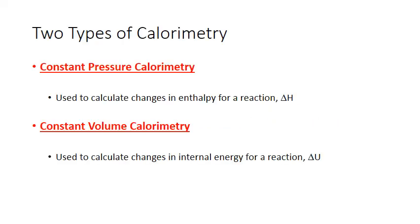There are two major types of calorimetry that we use in chemistry: constant pressure calorimetry and constant volume calorimetry. Both measure heat transferred into or out of a chemical reaction. The results from constant pressure calorimetry are used to calculate the enthalpy change for a reaction, or delta H. In contrast, the heat measured in constant volume calorimetry can be used to calculate changes in internal energy for a reaction, or delta U.